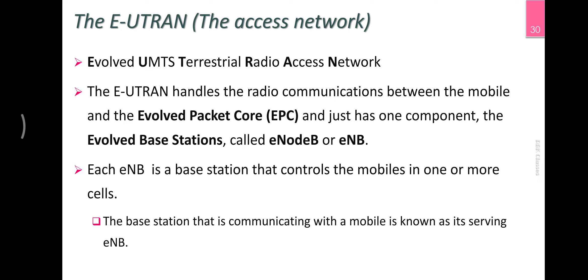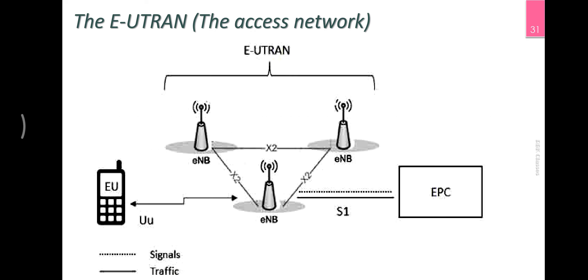This is the EPC — the core network. How do we use our mobile phone? We use our mobile device equipment. There is an access network with components: a node base station. Each node represents cells, and each node is called a cell. The cell signs are divided and the cell data is used.